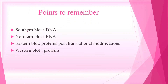There are many blotting techniques: southern blot, northern blot, eastern blot, and western blot. Southern blot is done for DNA, northern blot is done for RNA, eastern blot is done for post-translational modifications in proteins, and western blot is done for proteins.